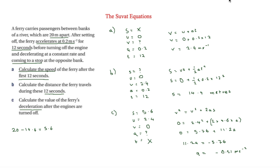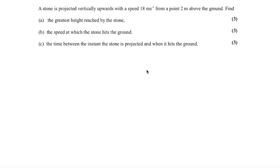The final question is about a stone projected vertically upwards with a speed of 18 metres per second from a point 2 metres above the ground. Part A asks for the greatest height reached. For projectile motion we must remember that acceleration due to gravity is minus 9.8 metres per second squared.